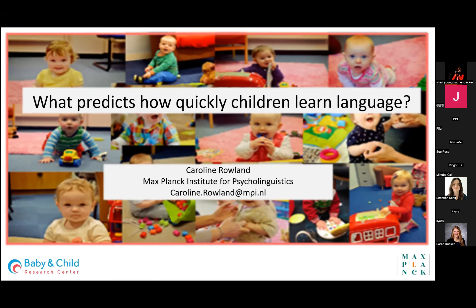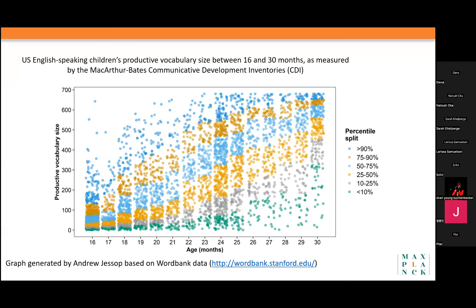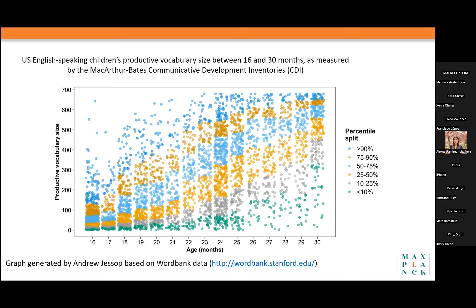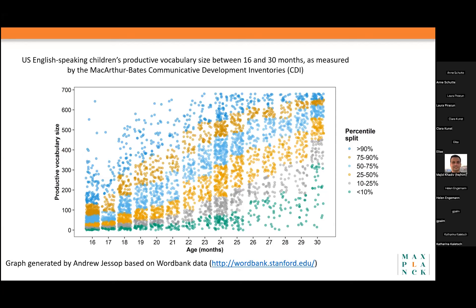The question is: why are there such huge individual differences in language acquisition trajectory in the first few years of life? The differences really are huge. What you can see in this graph is the productive vocabulary differences across children from 16 to 30 months of age. On the y-axis is children's productive vocabulary size; on the x-axis is age in months from 16 to 30. Each dot is a child, and the different colours show the percentile split. Differences emerge early and grow across time.